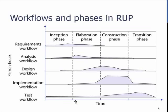The idea behind the Rational Unified Process is that there are workflows and phases. The phases are basically something from the Waterfall model, but they actually aren't, because on each phase there are different workflows for different activities like requirements, analysis, design, and implementation. So in the Inception, the first phase, the idea is that we do requirements work.